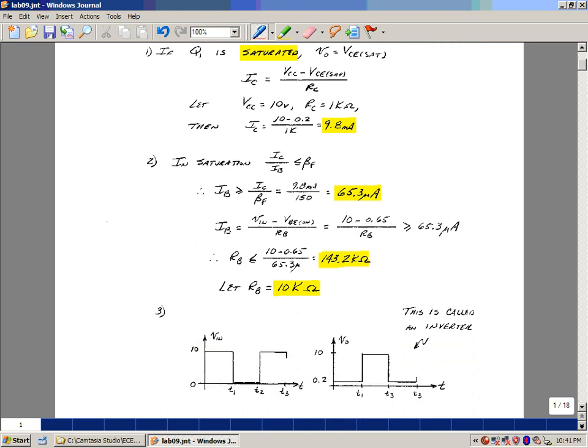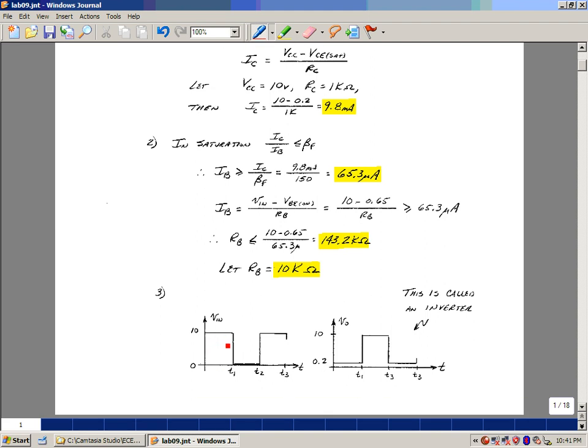So again, what's happening here is when the input is high, the transistor saturates, we have a low voltage around 0.2, and when the input's low, transistor's cut off, and the output's roughly equal to the power supply. It's called an inverter in logic, and this is typical of any kind of a transistor switching circuit.